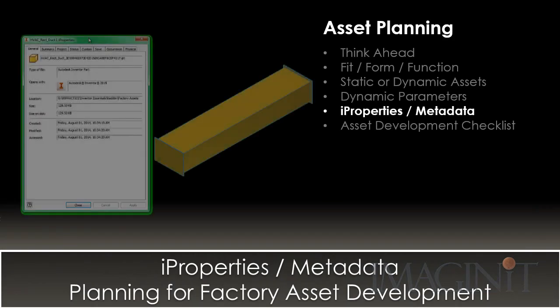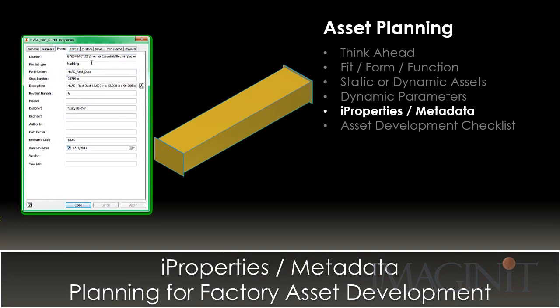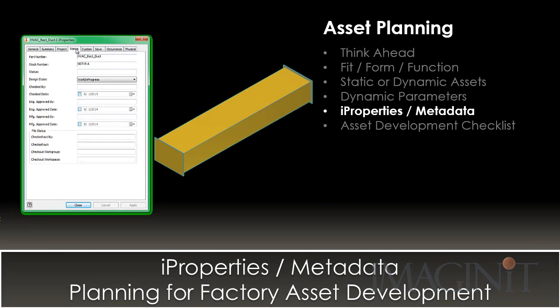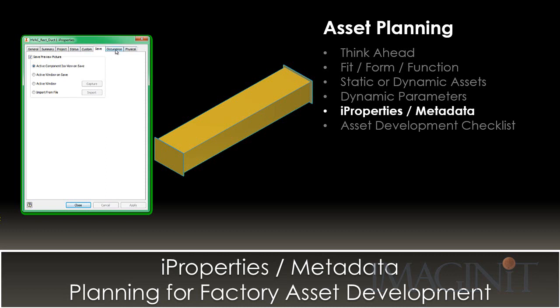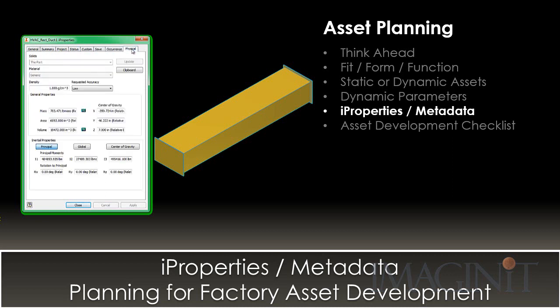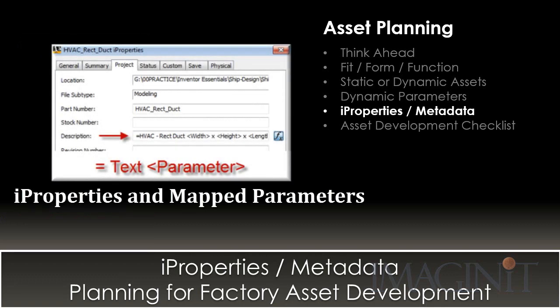Every Inventor component is equipped with an extensive set of IProperties. The information contained in these properties is utilized in many downstream processes, such as bill of materials, parts lists, balloons, or title blocks. For this reason, it's crucial that the required IProperty information be considered during asset development. Some fields in the IProperties, like the description field, contain information derived from the various parameter values used to create the asset. It is possible to map parameter values to IProperty fields, which ensures that the IProperty information reflects the accurate setting for each iteration of the asset.